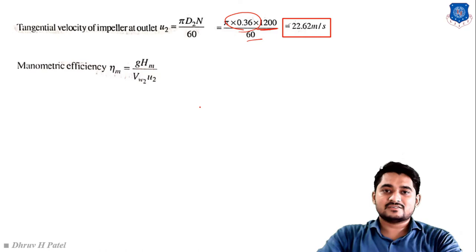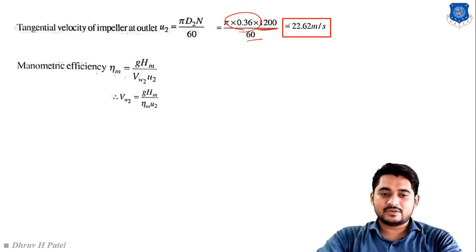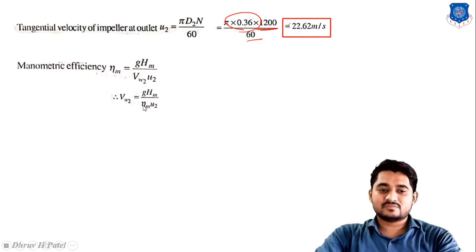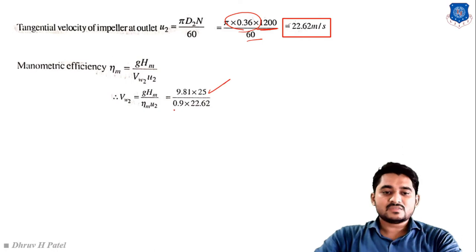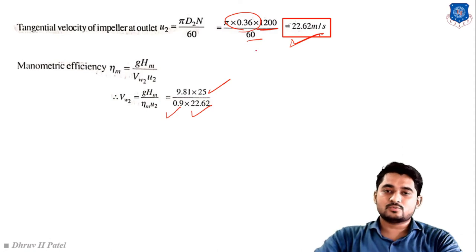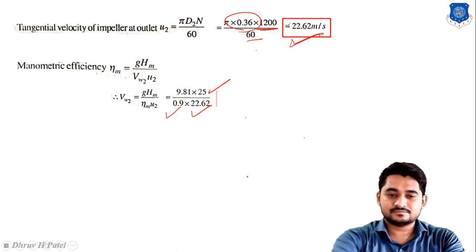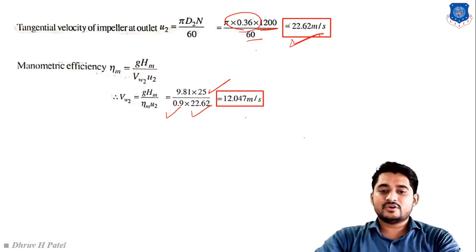From the given data, manometric efficiency η_m = 0.9. Substituting: V_w2 = 9.81 × 25 / (0.9 × 22.62) = 12.047 m/s.